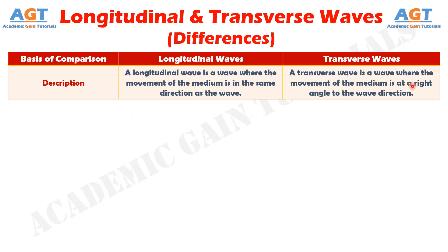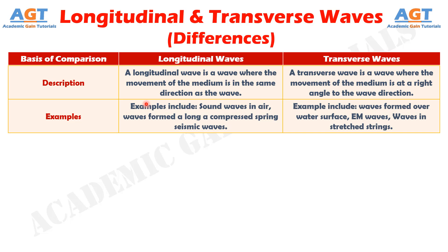If we differentiate them in terms of their examples: examples of longitudinal waves include sound waves in air, waves formed along a compressed spring, seismic waves, etc. On the other hand, examples of transverse waves include waves formed over a water surface, electromagnetic waves, and waves in stretched strings, etc.